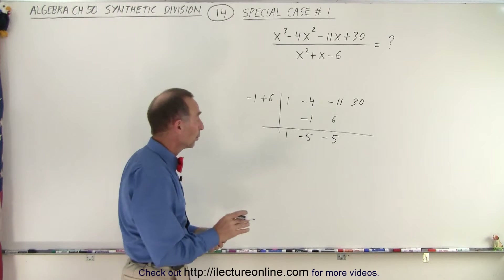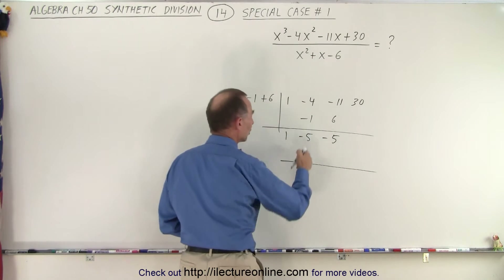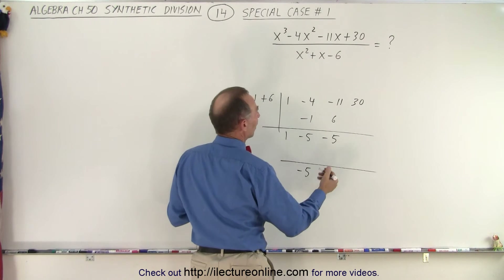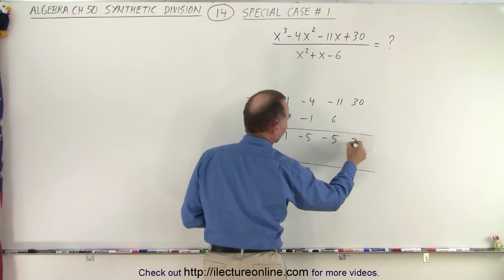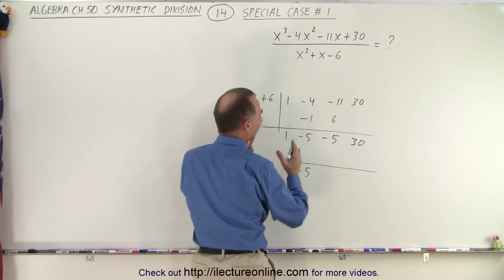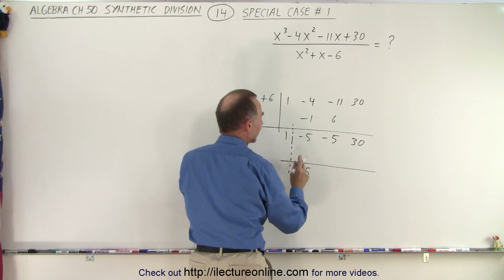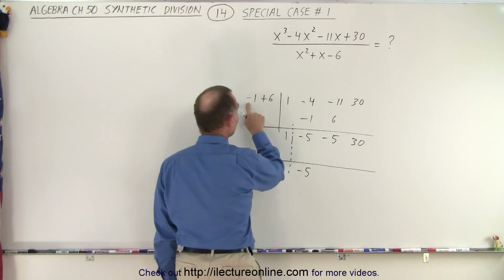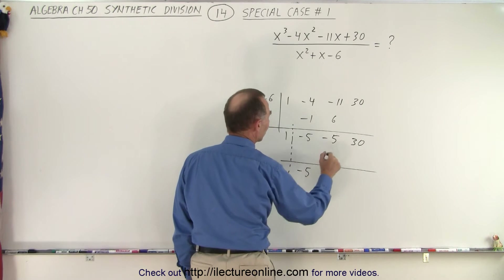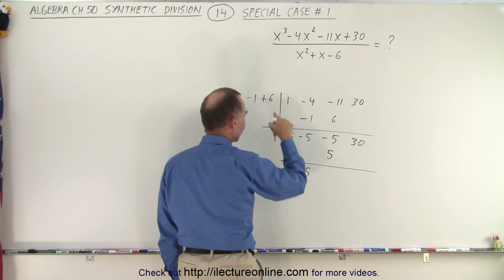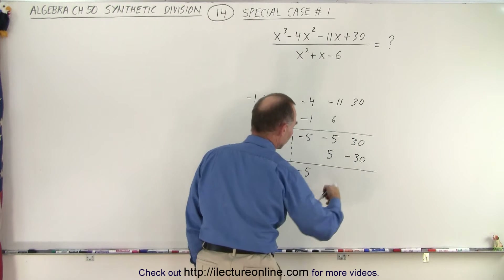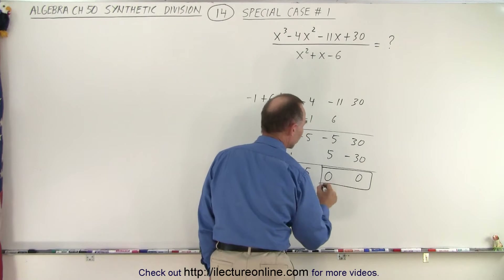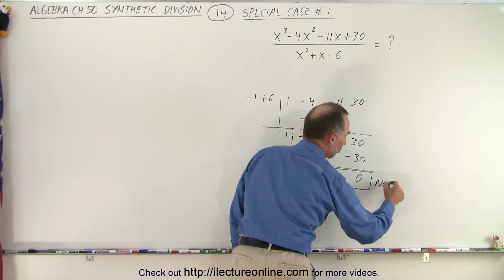So what do we do now? We draw another line down here, and we drop the first number down to minus 5, and then we do the same thing, except that we take the 30 and we drop it down again. We now do the exact same thing, but we take the last three numbers instead of all four numbers. Again, we take negative 1 times negative 5, that is positive 5, and plus 6 times negative 5, which is a minus 30. We add those two together, we get 0. Add those two together, we get 0. And notice that both of those are 0, that means there's no remainder.